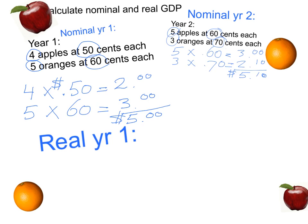Now let's agree that we're going to use year one prices to calculate real GDP in year one. And then when we calculate real GDP in year two, we're also going to use year one prices.